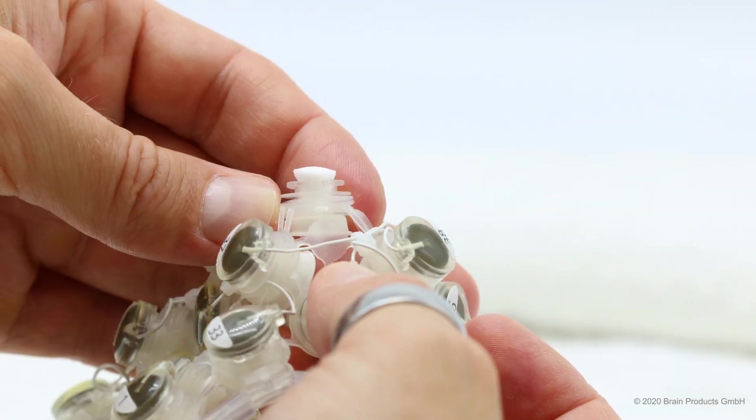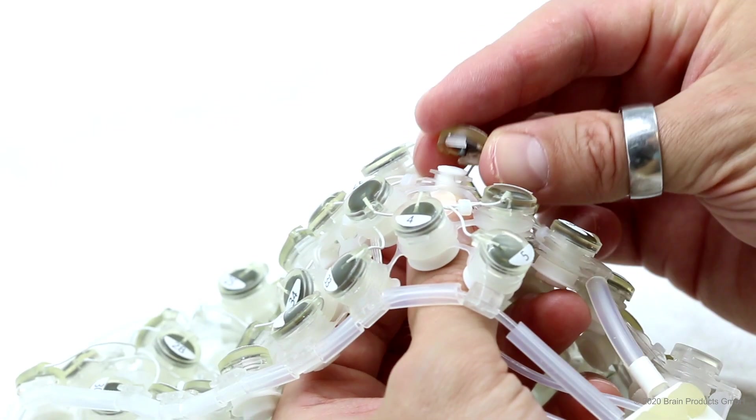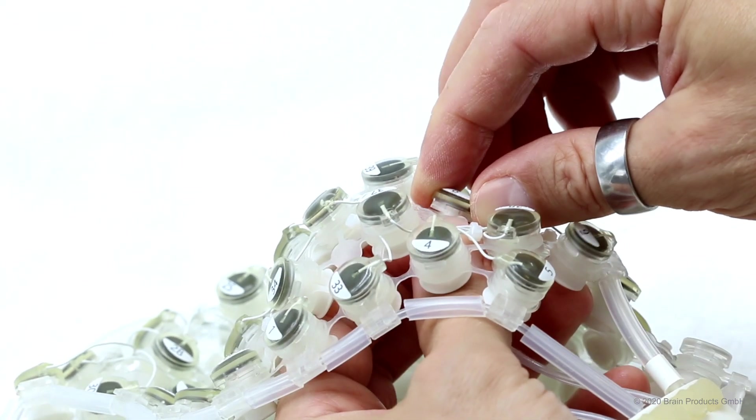The sponge should protrude about 2 mm above the opening of the holder. Put the electrode back in place on the holder by pushing it down into the sponge. Lock it in place with a clockwise motion.